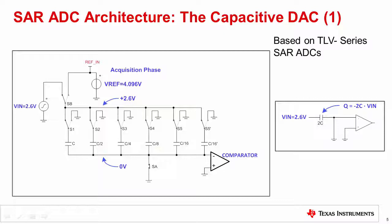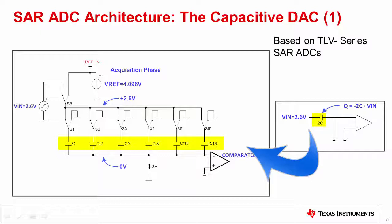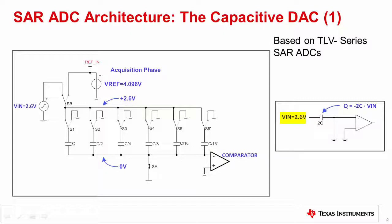The conversion process starts with the acquisition phase, where switch SA is closed and switch SB is connected to the input voltage of +2.6 volts. The input voltage VIN is applied at the ADC input, and a total charge of Q = -2C × VIN is stored in the capacitor array. The equivalent figure at the right shows the simplification of the input circuit. The capacitance 2C is the parallel combination of all the conversion capacitors, and the charge -2C × VIN is stored across it.